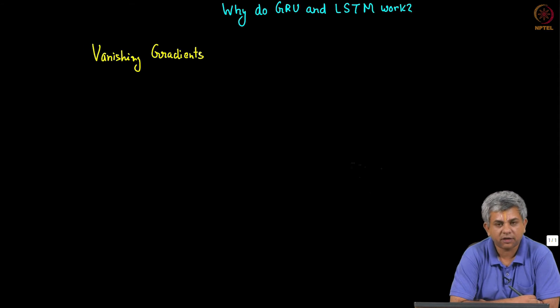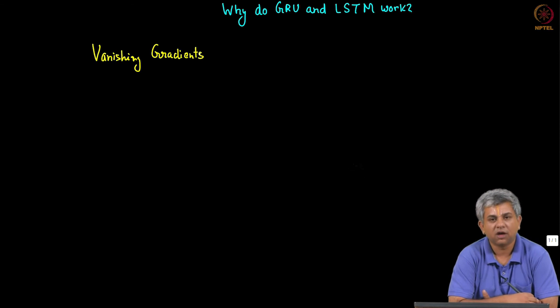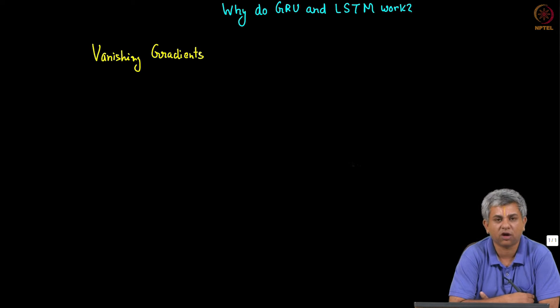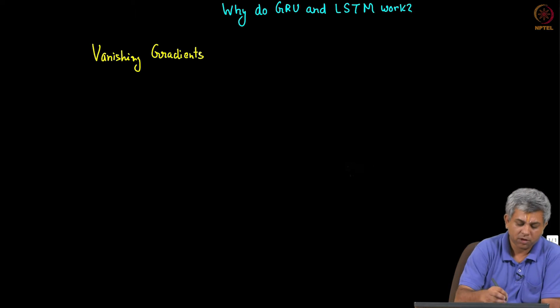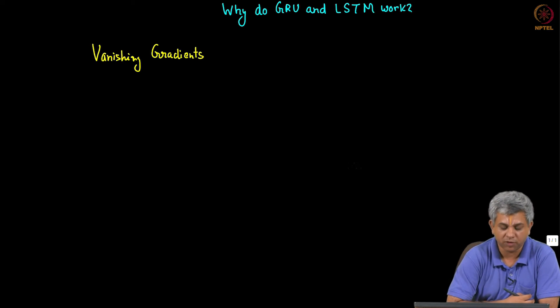Now the question is why is it that GRU and LSTM work? In this video we will give you a very short and heuristic explanation. The mathematics of this has not yet been totally worked out, so this is basically guesswork. Initial guesses behind LSTMs were based more on cognition rather than any direct mathematical reason, but I will try and give you a short heuristic for why this works.